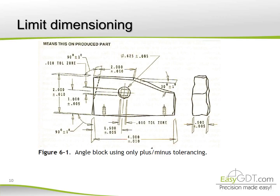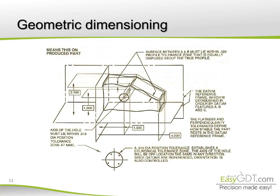Here we can see in more detail the limit dimensioning, or plus-minus dimensioning. Look at the tolerance zone delineated by this method on the hole — it has a square shape. Now here are the tolerance areas of the geometric dimensioning method. Look at the hole — the tolerance zone described by this method has a circular shape. You can also see that the restriction of the part is described by datums, fundamental concepts that we'll discuss in the next chapter.